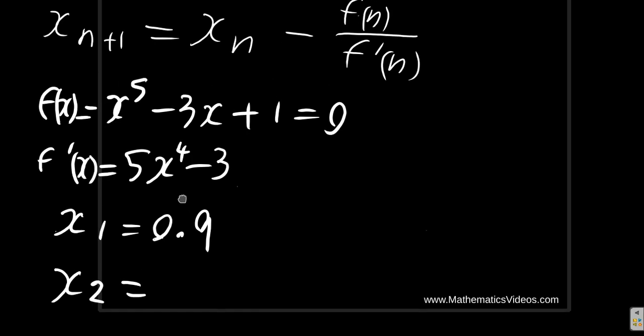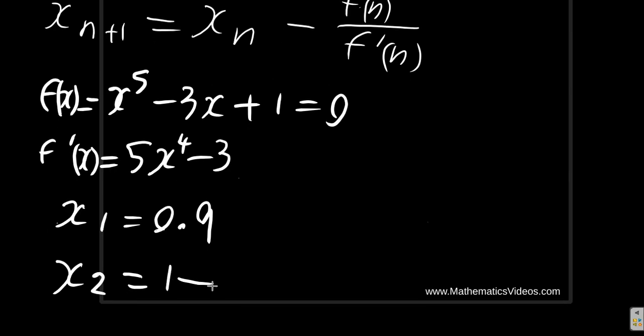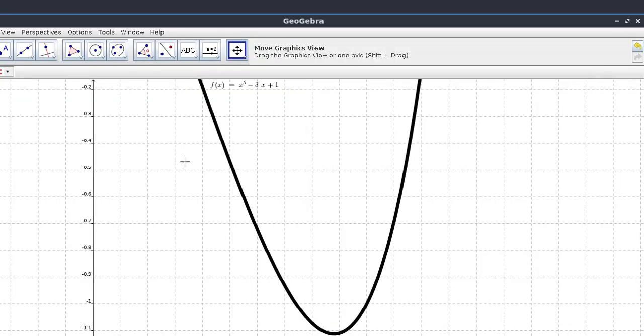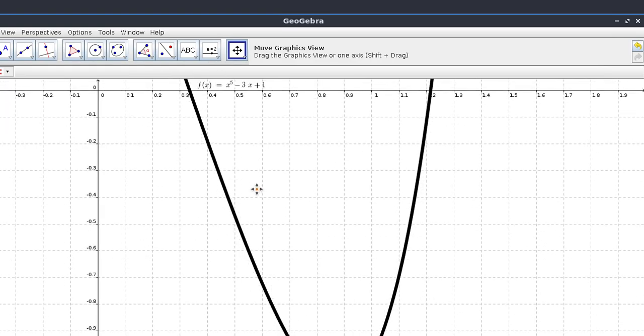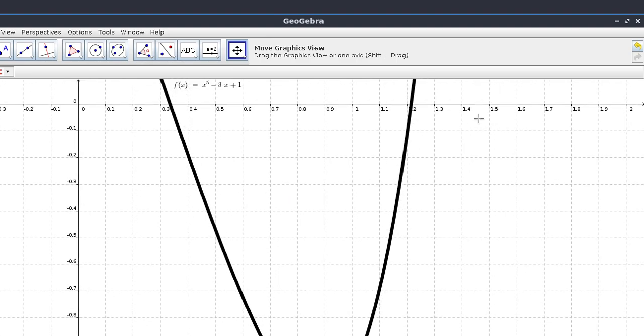It was 1 minus 1 to the 5th minus 3 by 1 plus 1 over 5 by 1 to the 4th minus 3. Now we got 1.5. Let's look at the graph. Did it take us any closer? We used 1, we went out to 1.5. So this was not very near to the root and it went all the way out to 1.5.